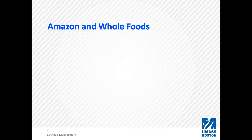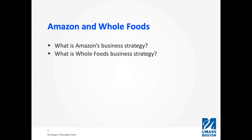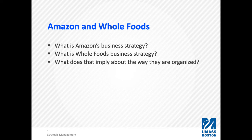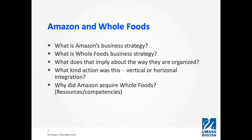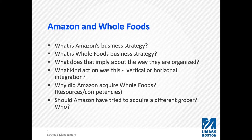Then take a moment to answer some questions. This is a little bit challenging, but just follow the steps. Look at the questions and maybe pause the video to write them down. Here are the questions: What is Amazon's business strategy? What is Whole Foods' business strategy? What does that imply about the way they are organized? What kind of action was this — vertical or horizontal integration? Why did Amazon acquire Whole Foods? What resources, competencies, and transaction costs were at play? Should Amazon have tried to acquire a different grocer, and if so, who?